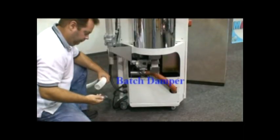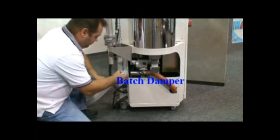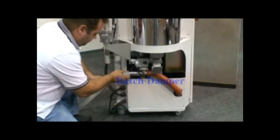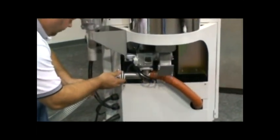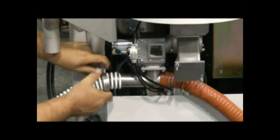At the lower back of the unit is the material discharge port or batch damper. Using the white PVC hose and hose clamp, connect the length of hose to the damper, and then connect the other side to the receiving hopper on the injection machine.